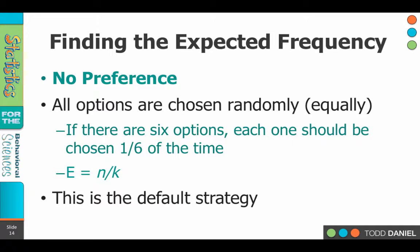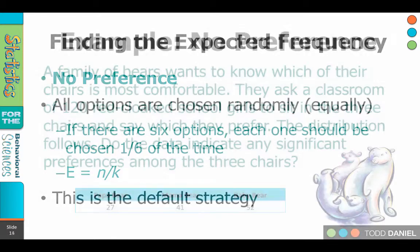So we would take the total number of people choosing, divide by six, that's how many people should choose each type of soft drink each time around. Now this is the default strategy for a chi-square.